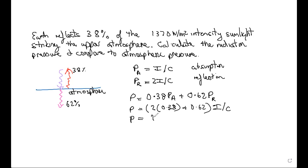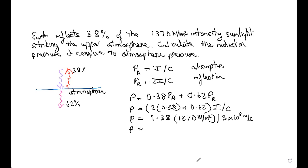The factor in parentheses works out to 1.38. We then multiply by the intensity of sunlight — 1.37 kilowatts per square meter — and divide by the speed of light, 3 times 10 to the 8 meters per second. The radiation pressure comes out to be a tiny number because we're dividing by the speed of light: about 6.3 times 10 to the minus 6 newtons per square meter.